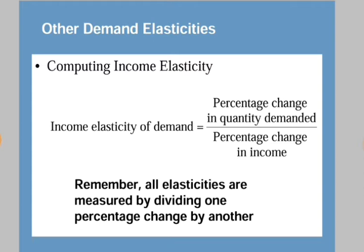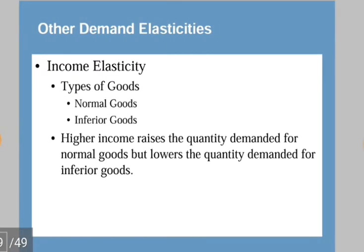For income elasticity, we have to consider the types of goods: normal goods and inferior goods. Higher income raises the quantity demanded for normal goods but lowers the quantity demanded for inferior goods. So inferior goods have a negative relationship with consumers' income. If income increases, quantity demanded for a normal good increases, but for an inferior good it decreases. This classification is a comparison between two types of goods.